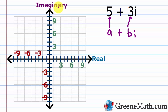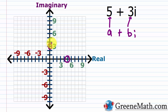It's very easy to plot 5 plus 3i. Matching this to a plus bi, my a is 5 and my b is 3. On the real axis, I'm looking for 5, so I go 5 units to the right. On the imaginary axis, I'm looking for 3, so I go 3 units up. Finding the meeting point, this is just like plotting (5, 3) in the real number system. So my point for 5 plus 3i is right there.